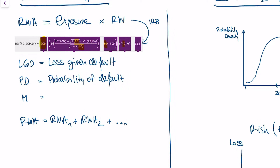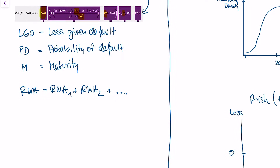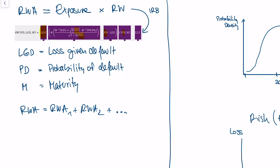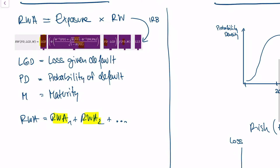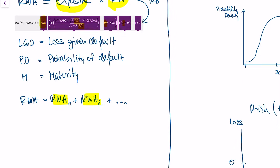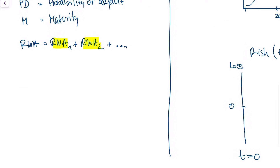What also goes into the formula is the so-called maturity — how long the loan actually goes, whether it's one year, two years, or three years. And now you see how you obtain your risk-weighted assets for credit risk. You calculate the risk-weighted assets for every single credit, take every credit exposure, calculate the risk weight, multiply them, and then add all those credits. This is how you get your risk-weighted assets under the Pillar 1 approach.